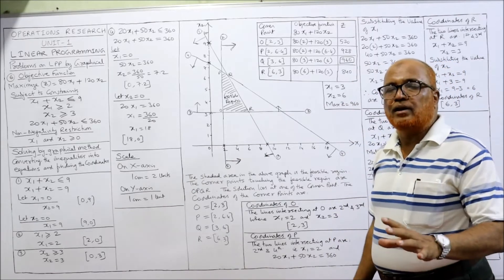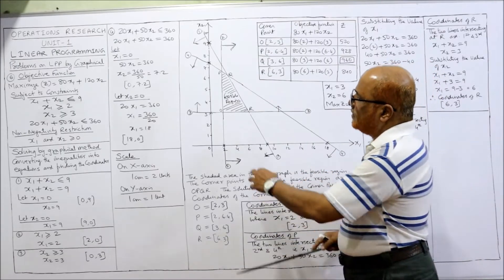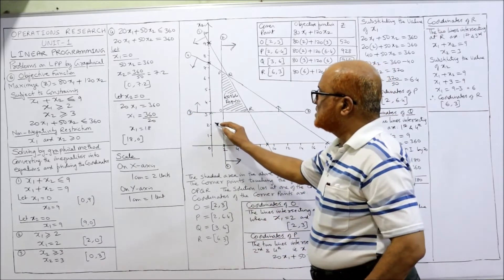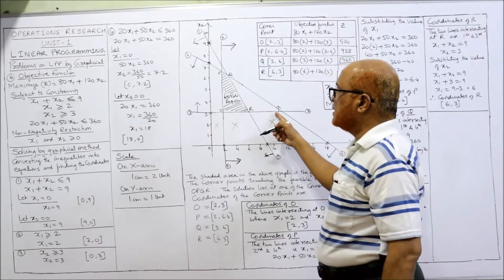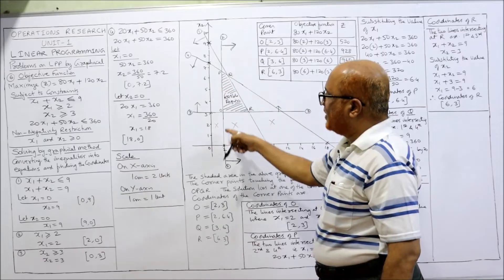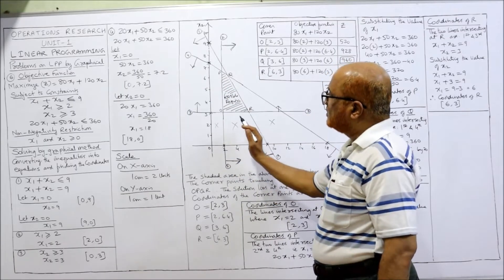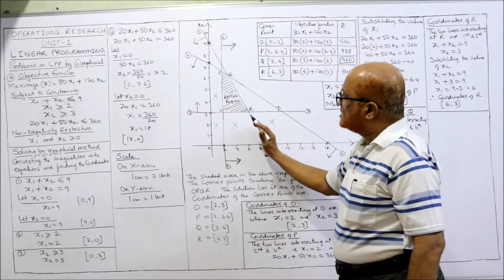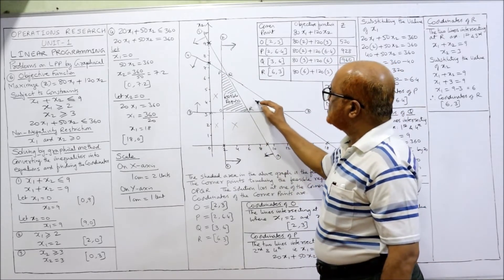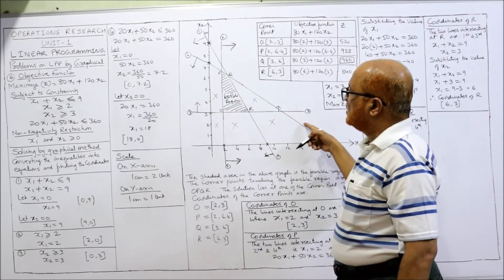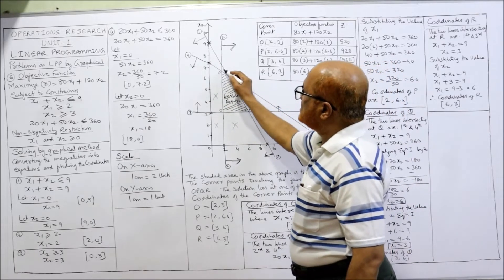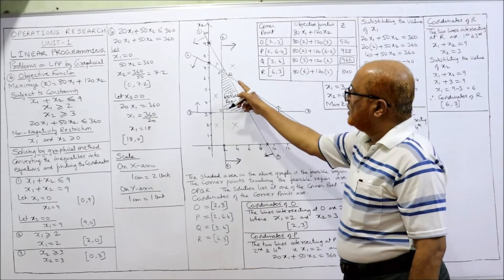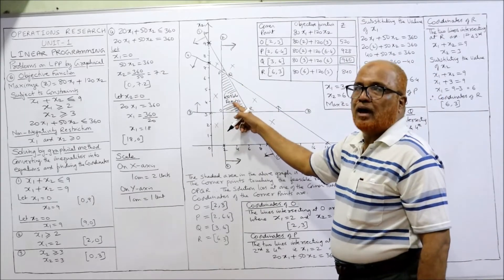Now we find the feasible region. This line says the feasible region will be upward, so we don't have the feasible region downward. This parallel line says it is to the right side. The first line says it is downward — that is not the feasible region. This last line also says downward — not the feasible region. Now you can see the bounded feasible region.